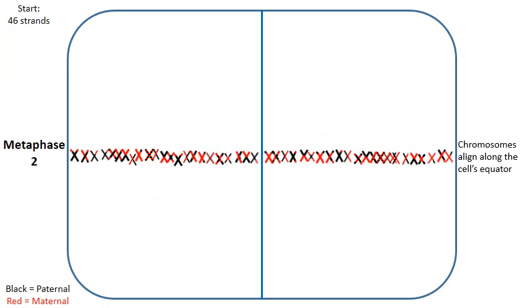Difference being, notice how it's not tetrads anymore. The tetrads were separated during anaphase number one. So now it's just the individual chromosomes that are aligned along the equator of the cell.